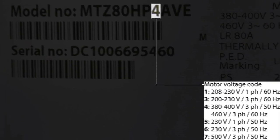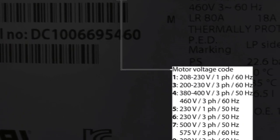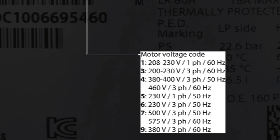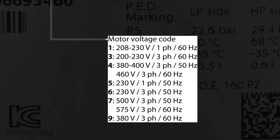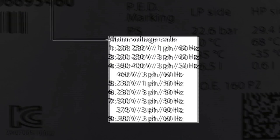The ninth digit in the nomenclature signifies the voltage code. This is denoted by a number which defines the voltage, number of phases, and frequency.